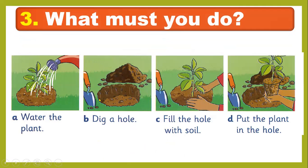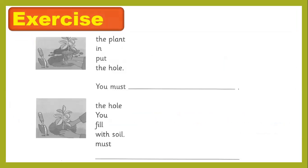There are four steps shown in the pictures for how to make a new plant. The pictures are not in order — you have to arrange them in sequence. First, you dig a hole; then put the plant in the hole; then fill the hole with soil; and last, water the plant. You have to write the correct numbers for each step.